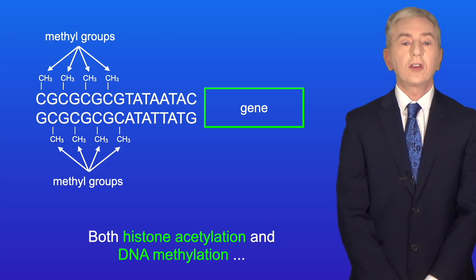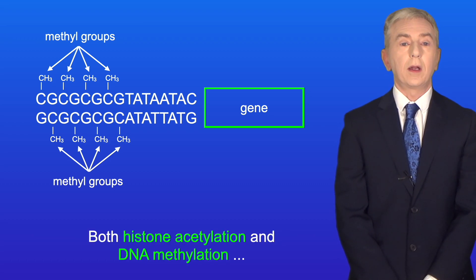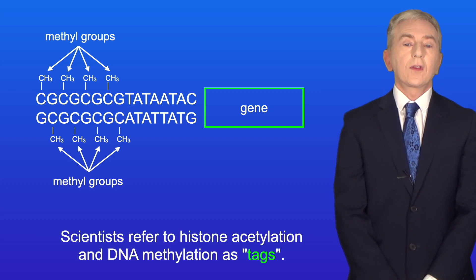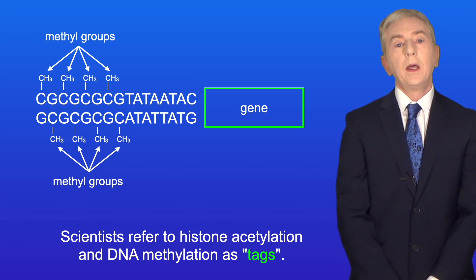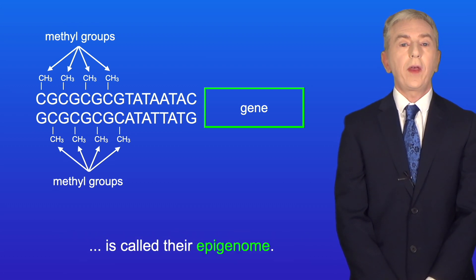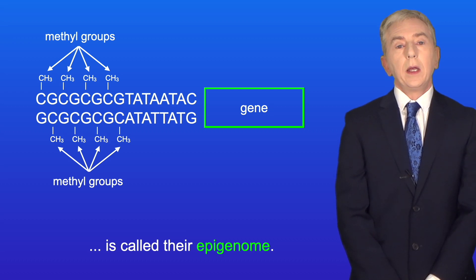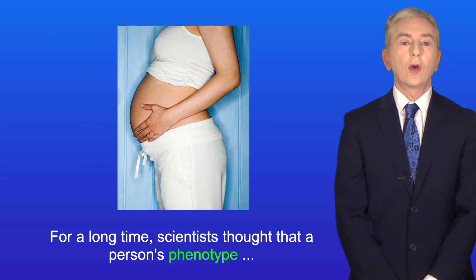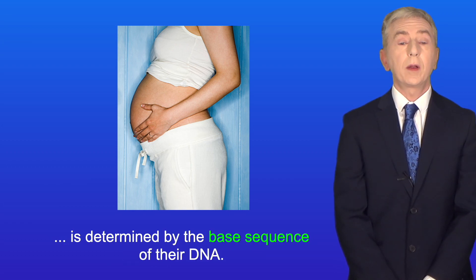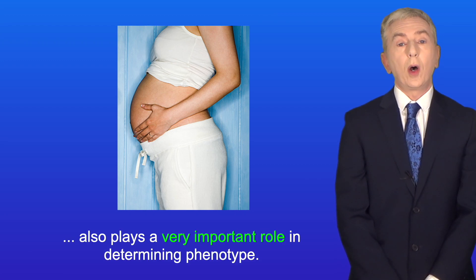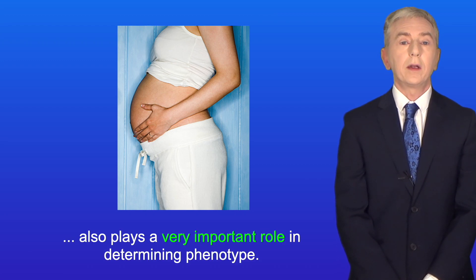So both histone acetylation and DNA methylation can determine whether genes are transcribed or not. Scientists refer to histone acetylation and DNA methylation as tags, and the presence or absence of these tags across a person's DNA and histones is called the epigenome. For a long time scientists thought that a person's phenotype is determined by the base sequence of their DNA, but we now know that their epigenome also plays a very important role in determining phenotype.